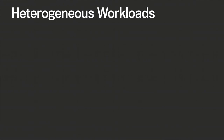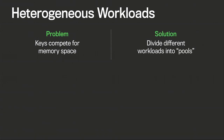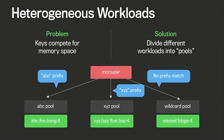Next, we have support for heterogeneous workloads. The problem is that keys compete for memory space in a uniform caching architecture — different keys and datasets interfere with each other. The solution is to partition them into different pools. McRouter sits in the middle and looks at the first three letters of a key: if it's an ABC key, it routes to the ABC pool; XYZ keys go to the XYZ pool. When there's no prefix match, requests go to a generic wildcard pool.